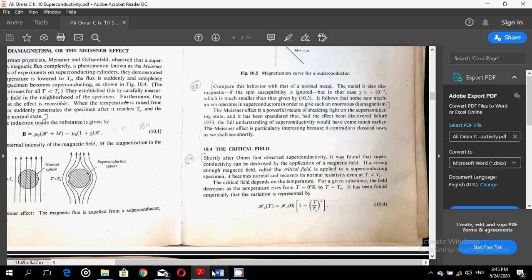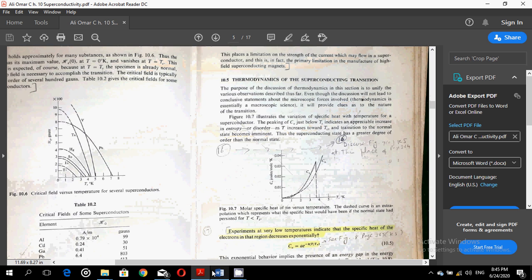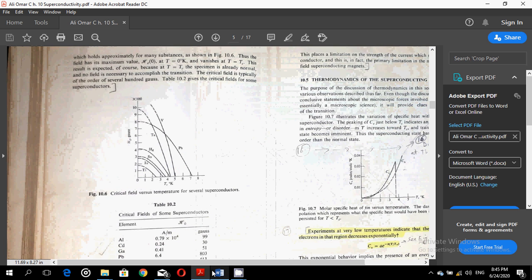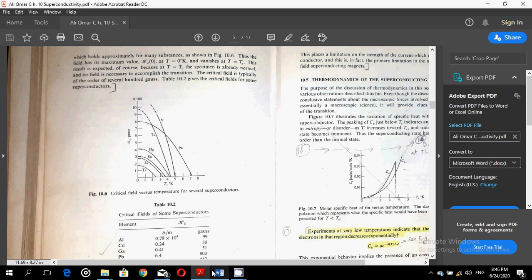The critical field depends on the temperature. For a given substance, the field decreases as the temperature rises from 0 degrees Kelvin to the critical temperature Tc. Now, the best equation which can fit to this observation is written below as equation 10.4. Hc as a function of temperature is equal to Hc at 0 temperature bracket 1 minus T over Tc squared, which holds approximately for many substances as shown in figure 10.6.